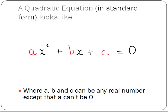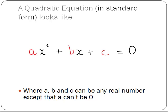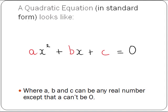Firstly we will look at what a quadratic equation is. A quadratic equation in standard form looks like this: ax squared plus bx plus c equals zero, where a, b and c can be any real number except that a cannot be zero.